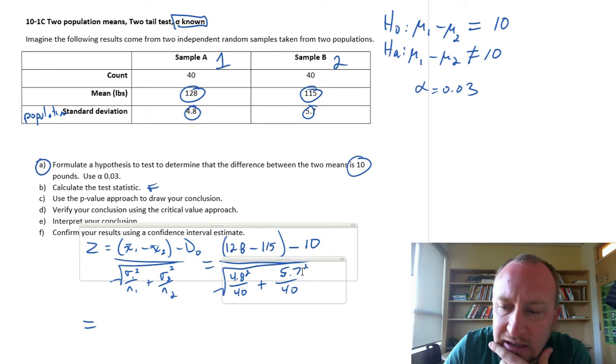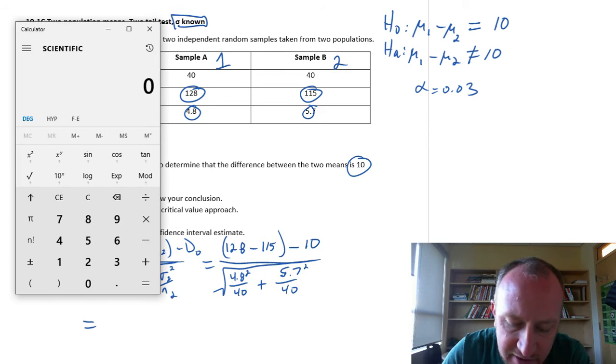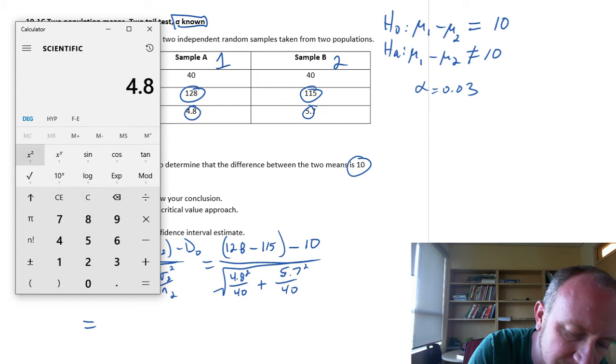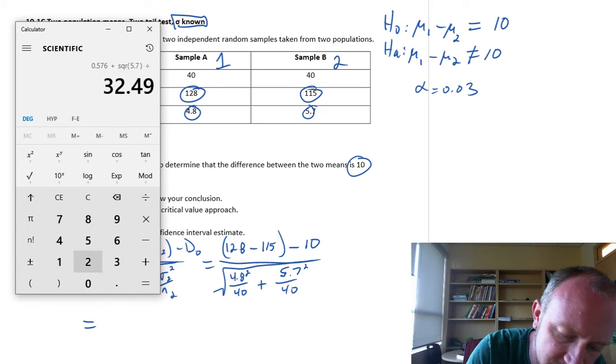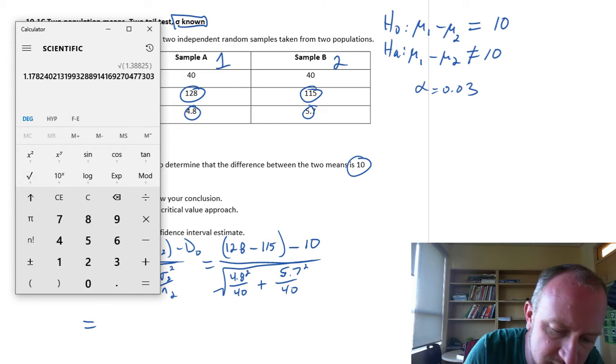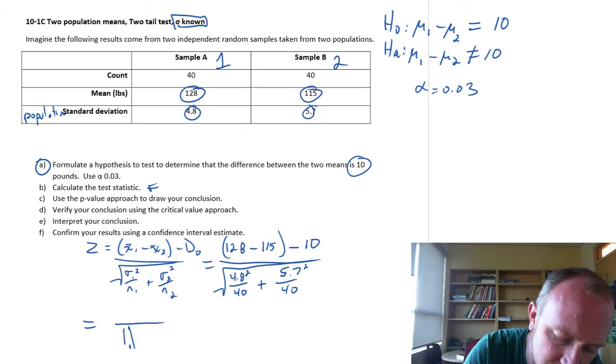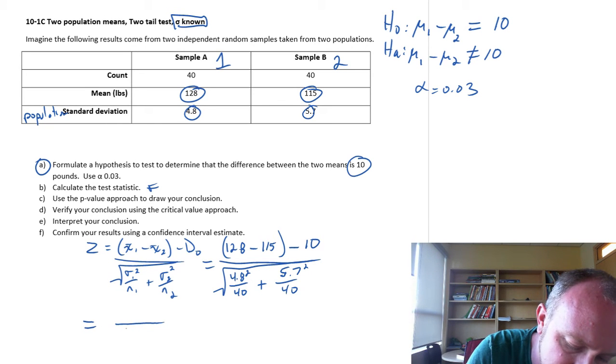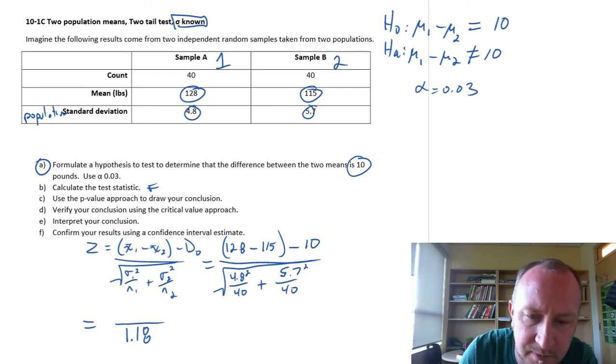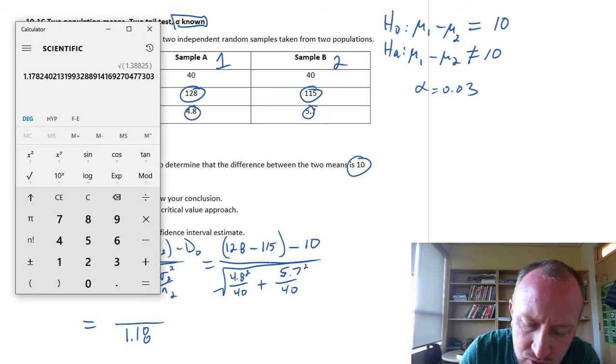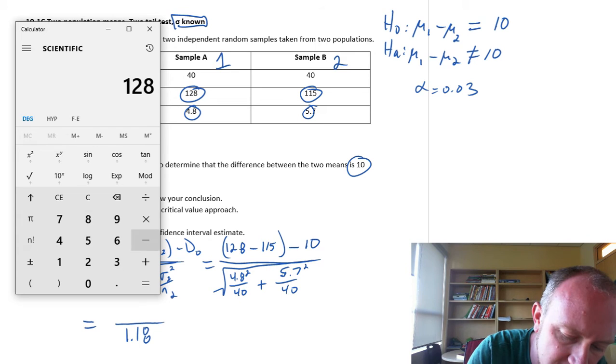This is 5.7 squared over 40. I'm going to calculate the denominators first just because I find it's easier to do. 4.8 squared divided by 40 plus 5.7 squared divided by 40, square root. So 1.18 will be my denominator.